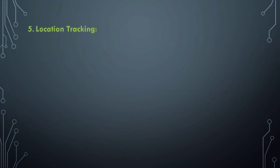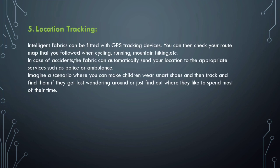Location tracking is an important feature of intelligent fabric. Smart fabrics can be fitted with GPS tracking devices so you can check your route map when cycling, running, or hiking. In case of an accident, the fabric can automatically send your location to appropriate services such as police or ambulance. Imagine making children wear smart shoes to track and find them if they get lost, or to find out where they like to spend most of their time.